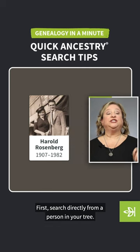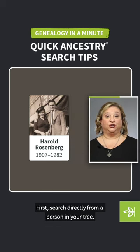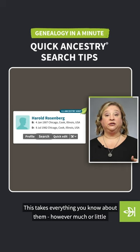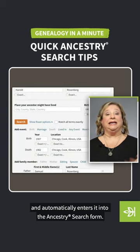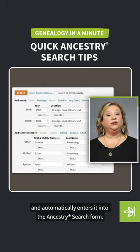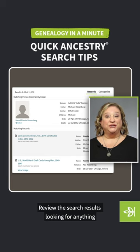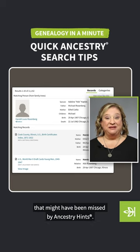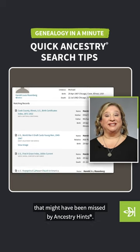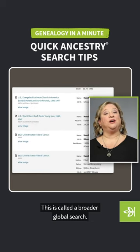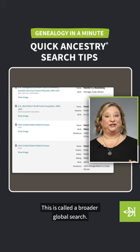First, search directly from a person in your tree. This takes everything you know about them, however much or little, and automatically enters it into the Ancestry search form. Review the search results looking for anything that might have been missed by Ancestry hints. This is called a broader global search.